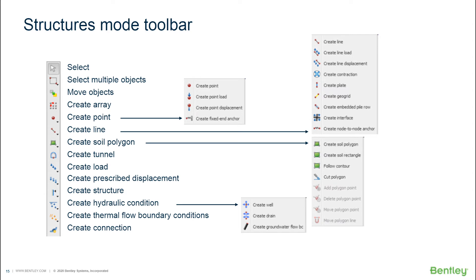The Create Point option also offers multiple choices: a geometric point, a point load, a point prescribed displacement, or a fixed anchor — so you don't need to create a point first and then add a load separately. Similarly, Create Line offers options like a line load, line prescribed displacement, interface, and others, all definable directly. In principle, Plaxis does require a geometric line before assigning a plate, but when you create a plate directly, the software automatically creates the underlying line and assigns the plate element to it — so you don't need to do them separately.